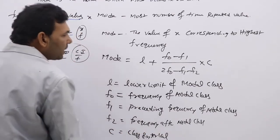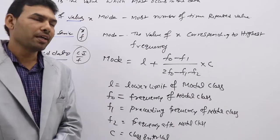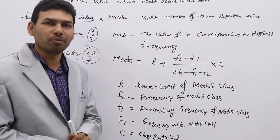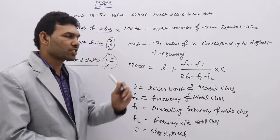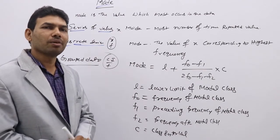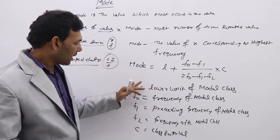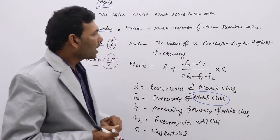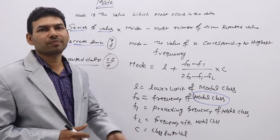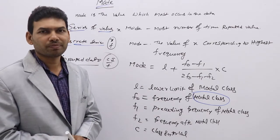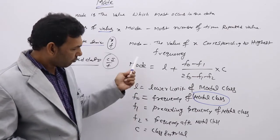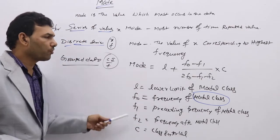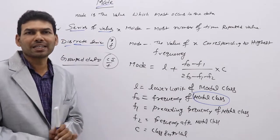Mode is very easy compared to mean and median. No need to find extra columns like cumulative frequency or mid values. Directly we can calculate L, F0, F1, and F2. The modal class plays a key role: it is the highest frequency class. That frequency is taken as F0, the frequency before it is F1, and the frequency after it is F2, with C being the class interval lower limit width.